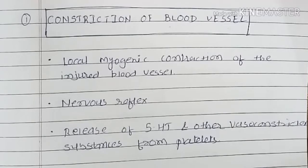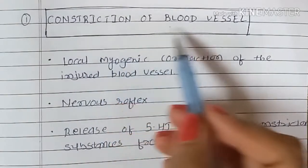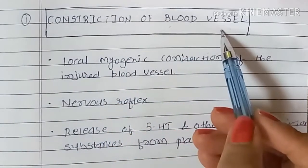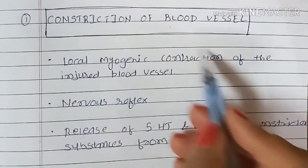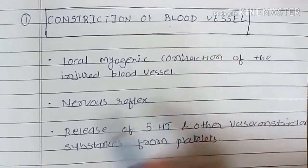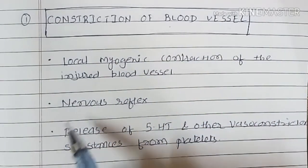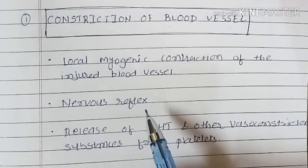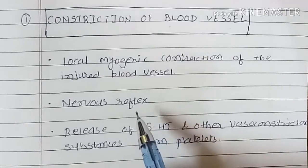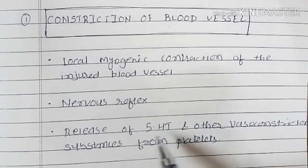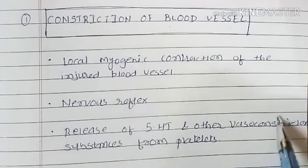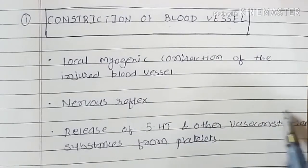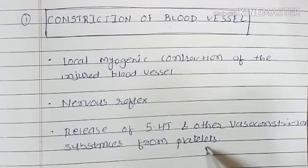The first event is constriction of blood vessel. It occurs due to local myogenic contraction of the injured blood vessel, nervous reflex originated from the injured tissue, and release of 5-hydroxytryptamine and other vasoconstrictor substances from platelets.